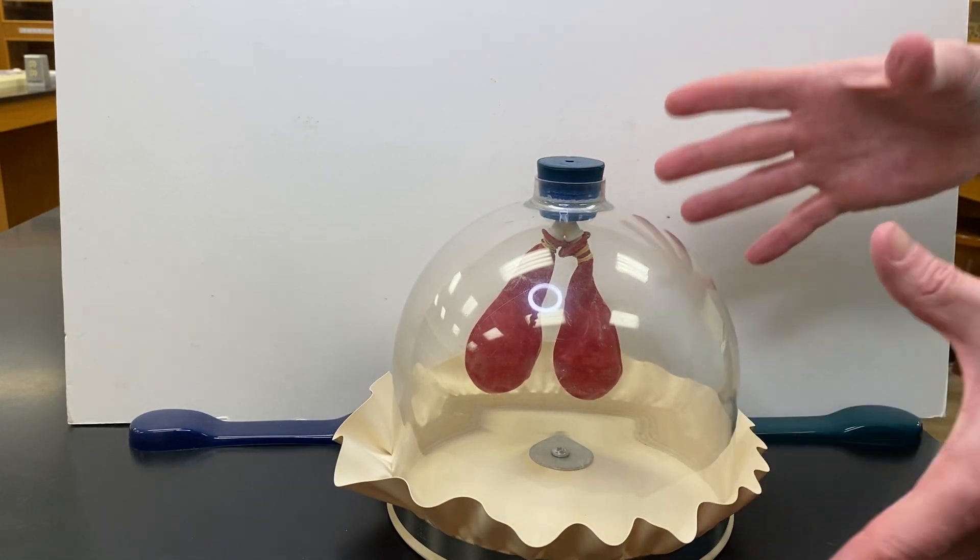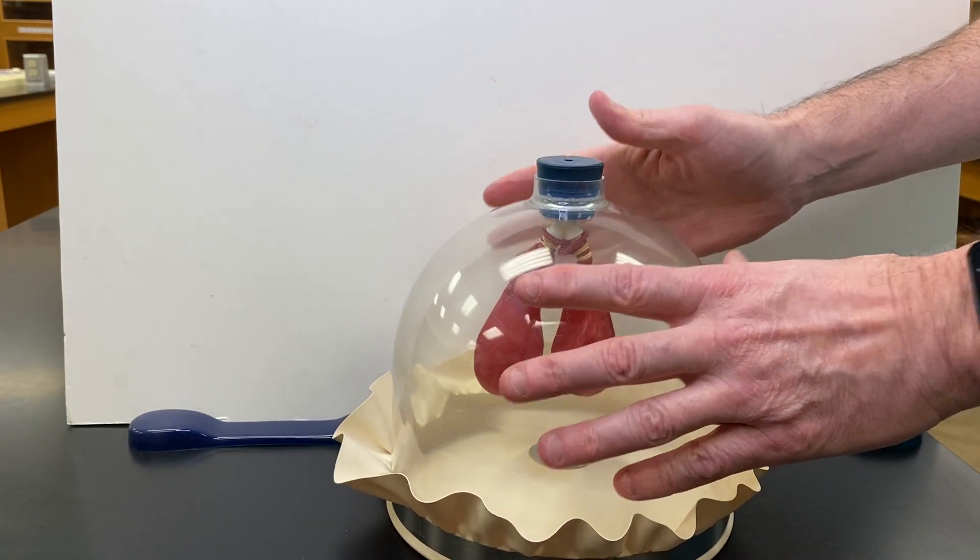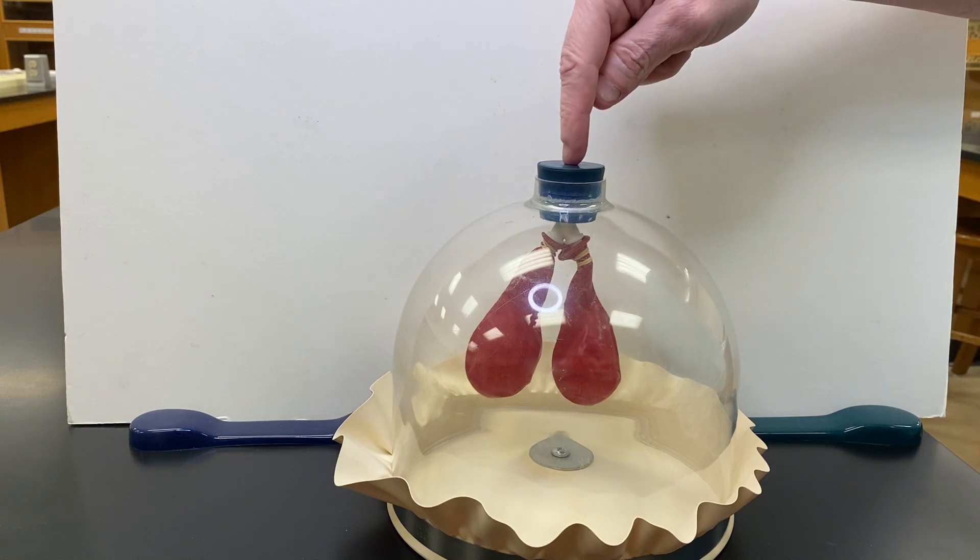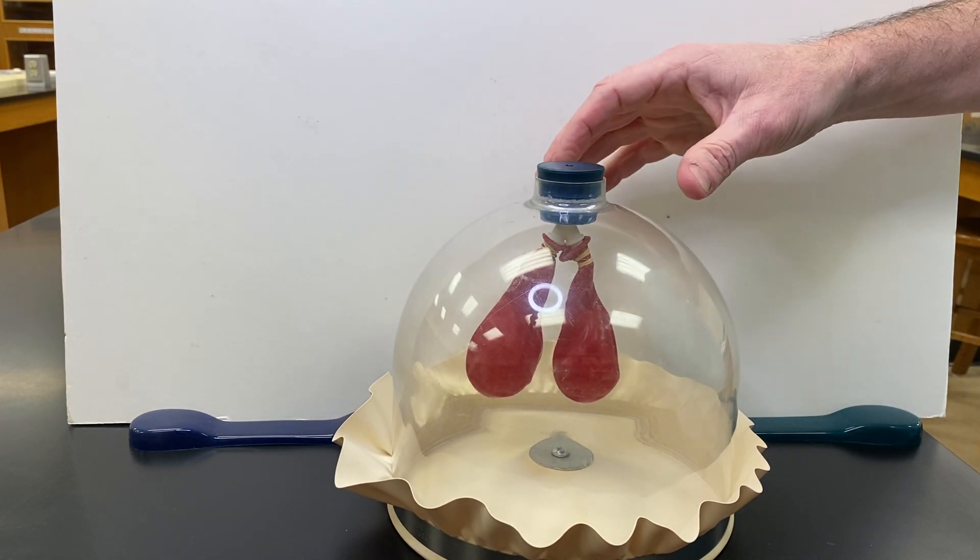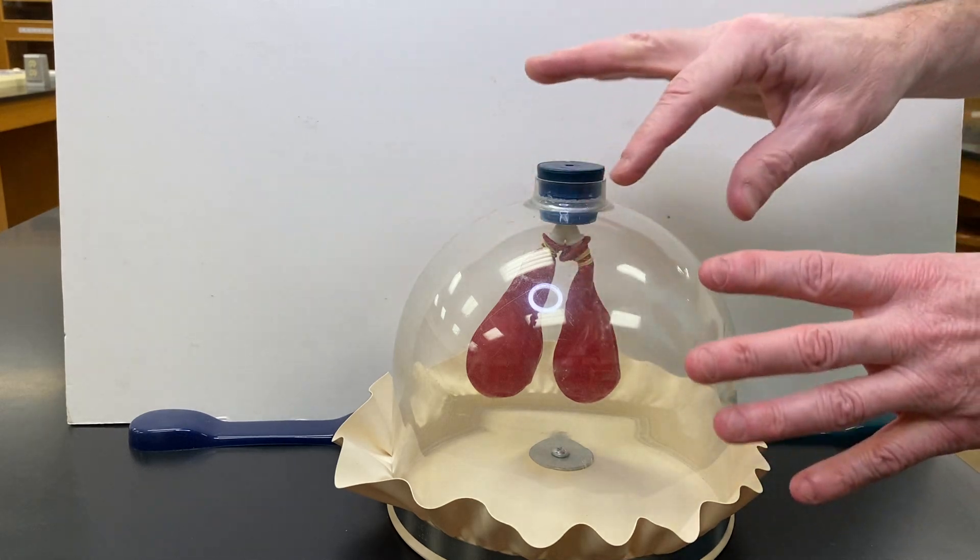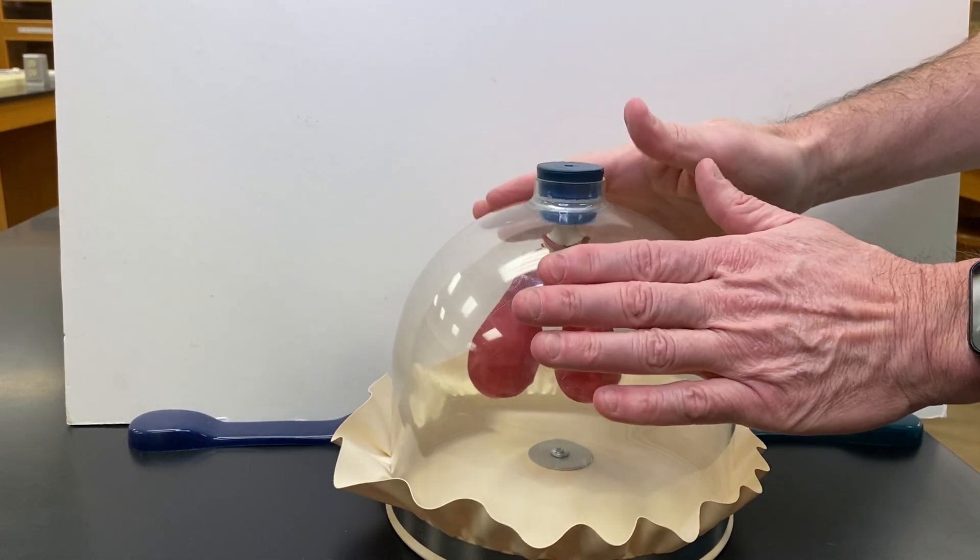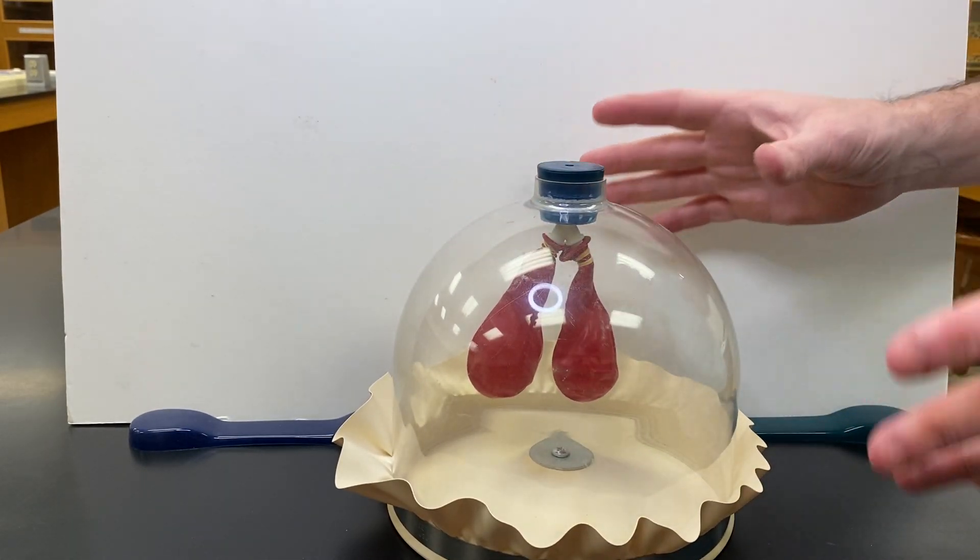This bell jar represents the rib cage, and the opening would be the trachea. Those bags inside represent the lungs, with the space between the balloon and plastic being the pleural cavity.